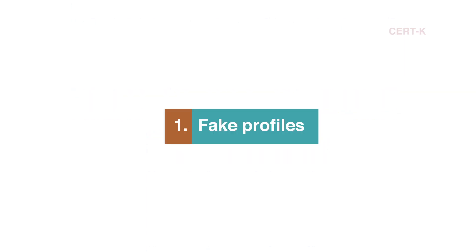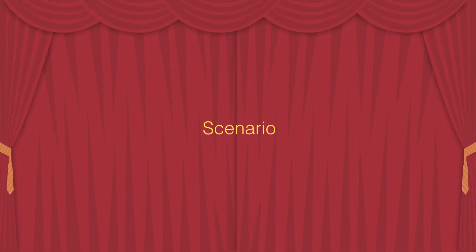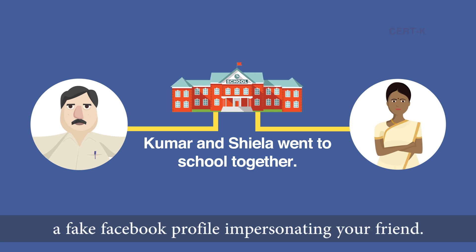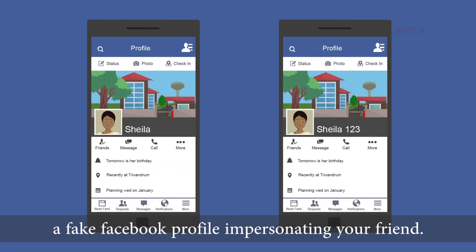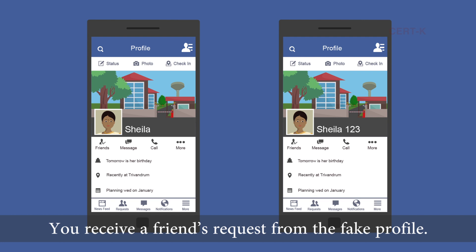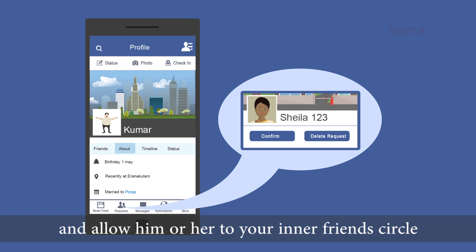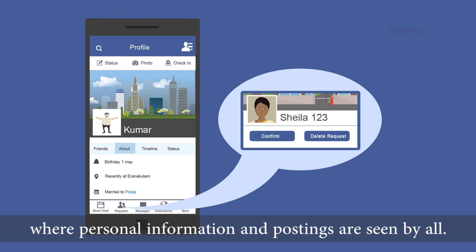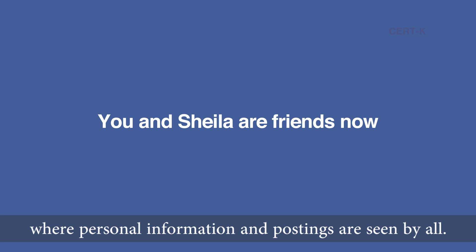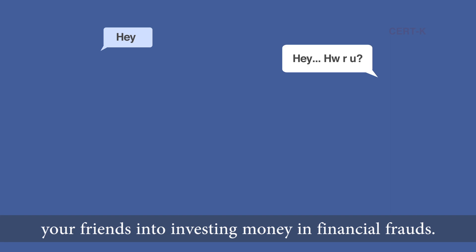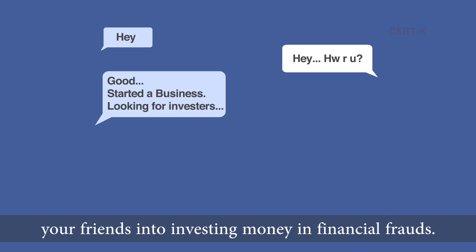Fake Profiles. A fraudster profiles you personally and creates a fake Facebook profile impersonating your friend. You receive a friend request from the fake profile, and seeing the name of your friend, you accept the request and allow them into your inner friend circle where personal information and postings are seen by all. The fraudster then posts messages to trick you and your friends into investing money in financial frauds.